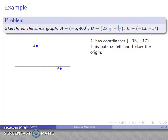And finally, our third point, C, negative 13, negative 17. So sign is more important. Sign is negative x-coordinate, so I'm to the left of the origin. The y-coordinate, also negative, so I'm going to be below the origin, so I'm going to be over here someplace.